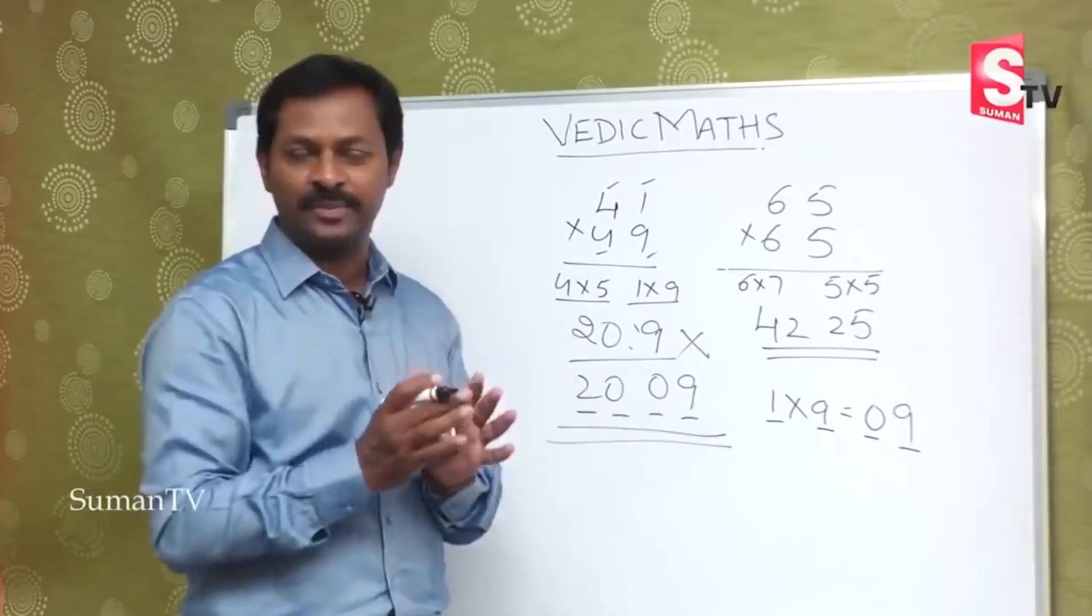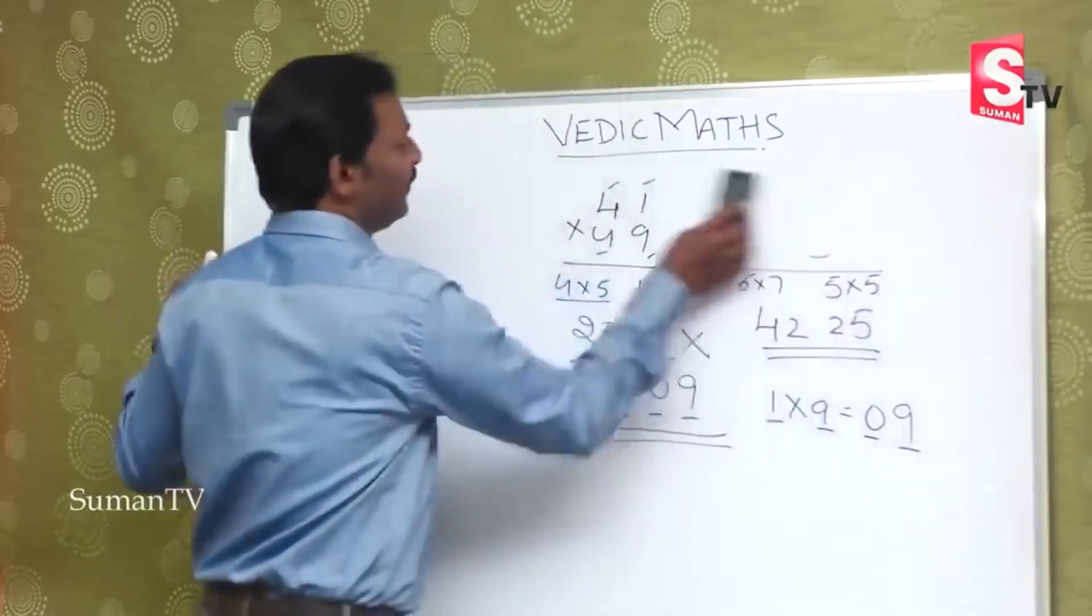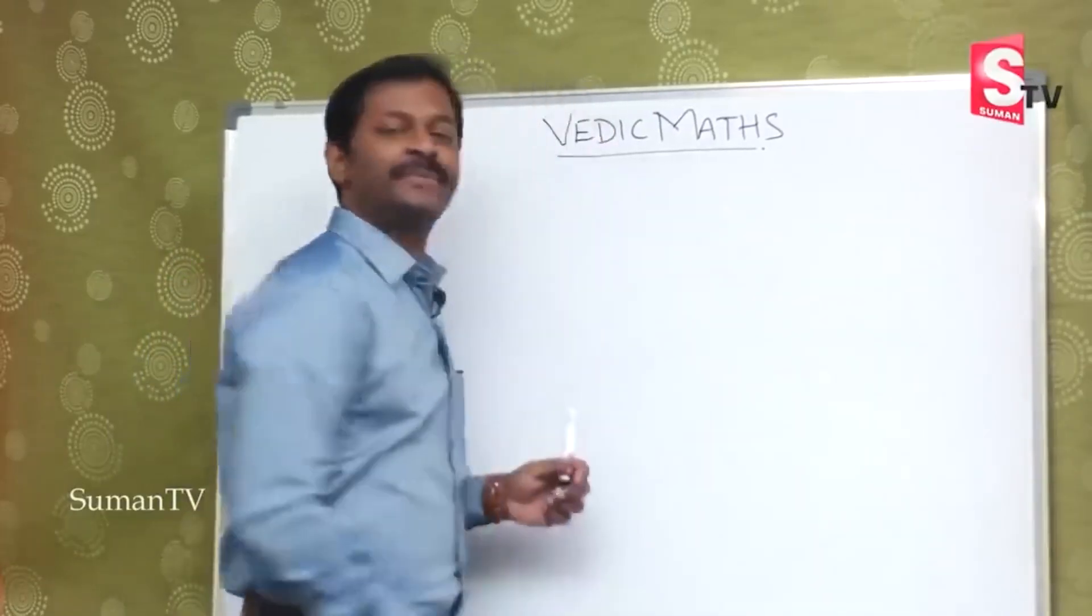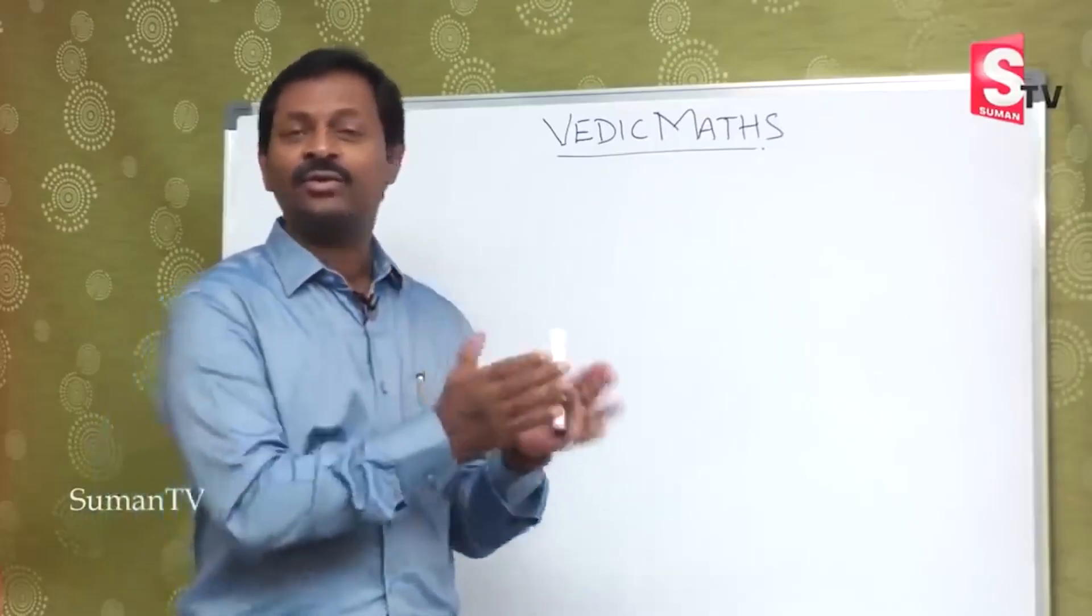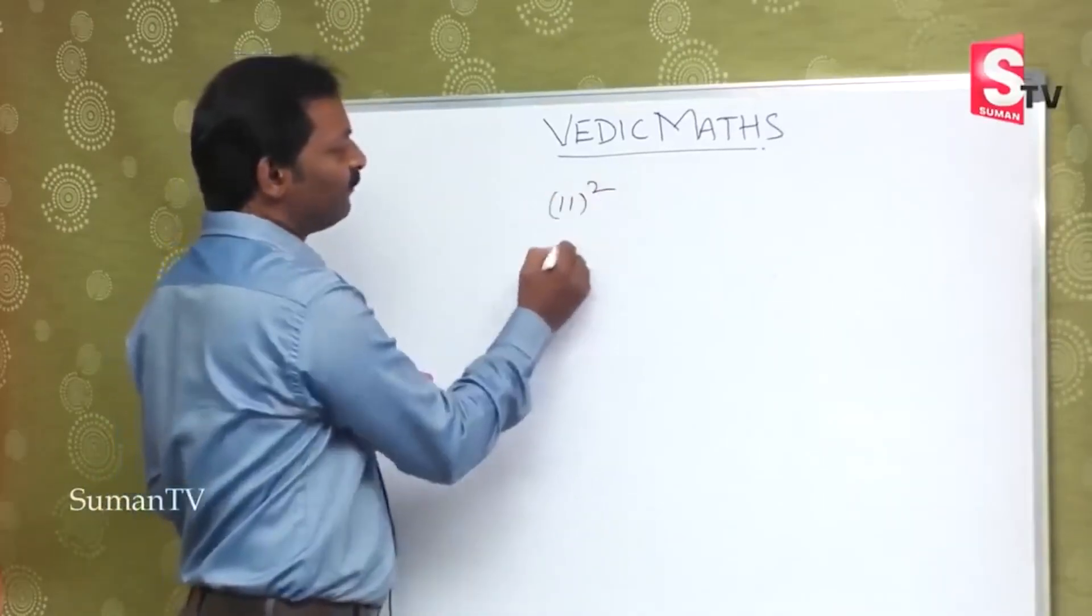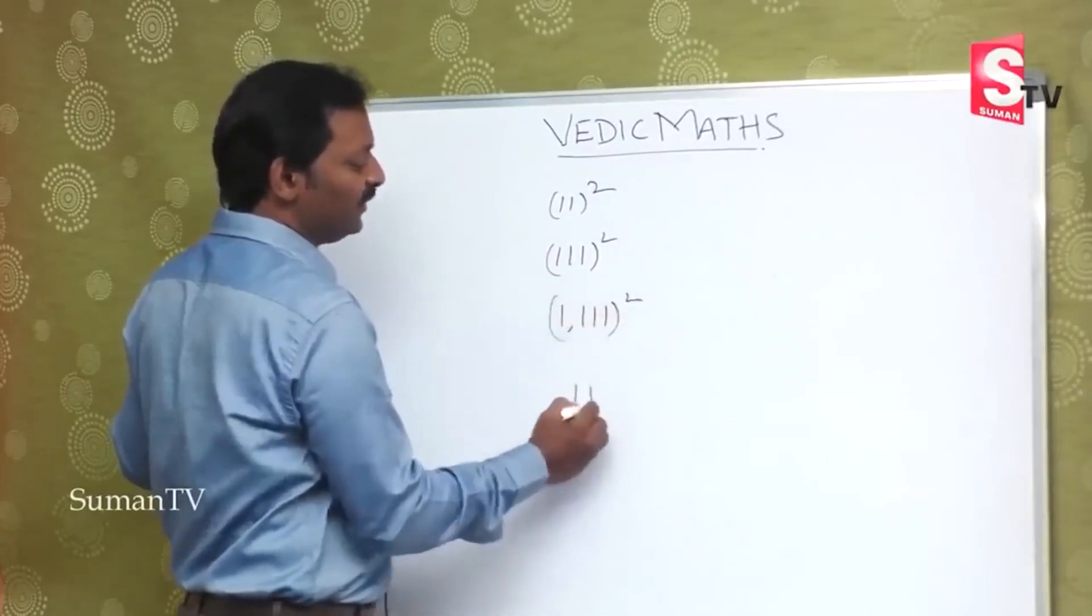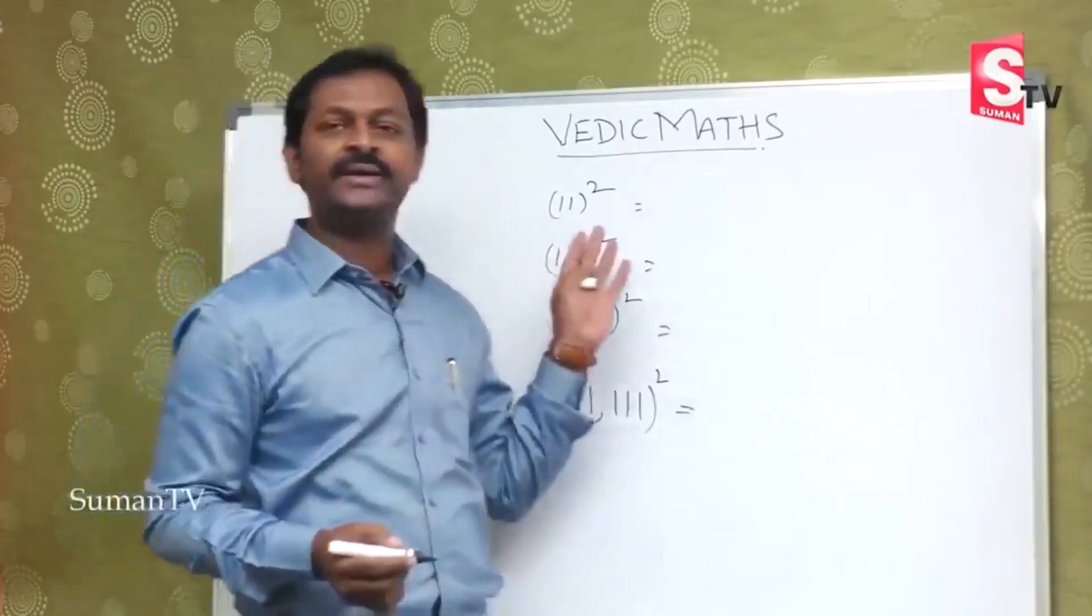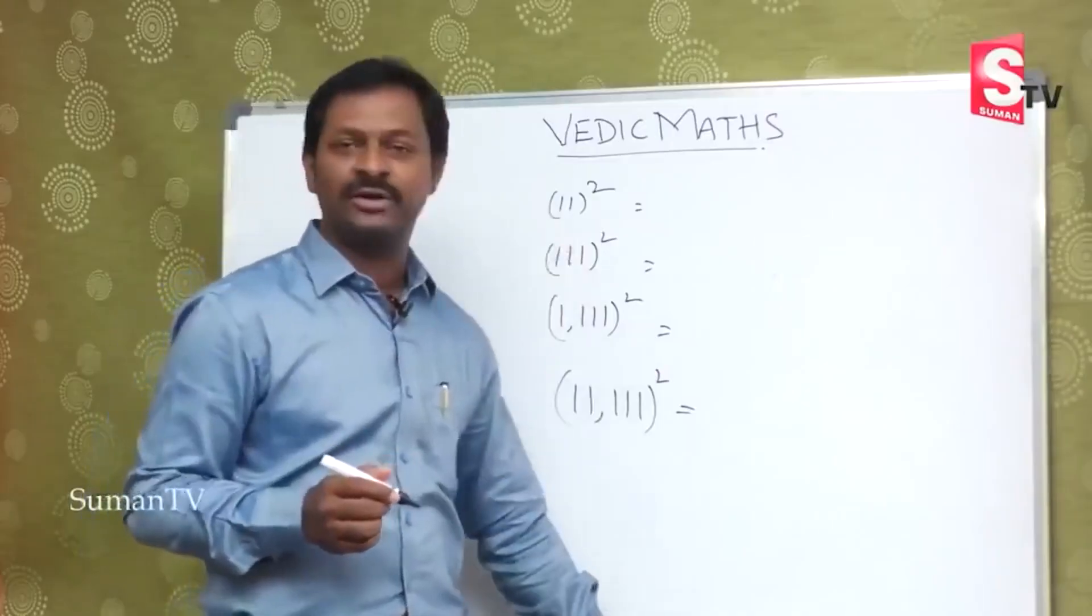So we will take one more concept. In the previous chapters we have discussed about squares. So these squares could have one common methodology. Suppose if you take 11 square or 111 square or 1111 square or 11111 square. So by mere observation directly we will do this course. If you take any digits, there are two digits. So you know ascending order and descending order.